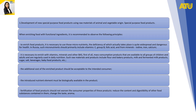When enriching food with functional ingredients, it is recommended to observe the following principles. It is necessary to use those micronutrients whose deficiency is widespread and dangerous for health. For example, in Russia, such micronutrients should primarily include vitamin C, group B vitamins, folic acids, and from minerals: iodine, iron and calcium.